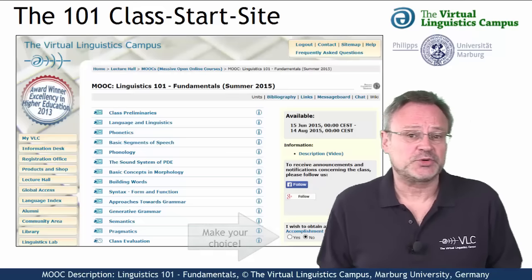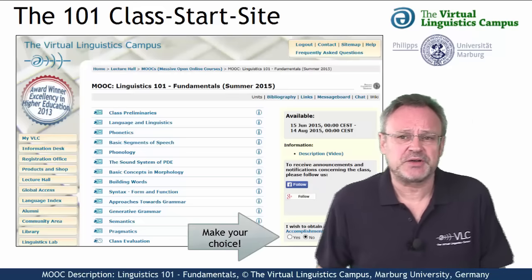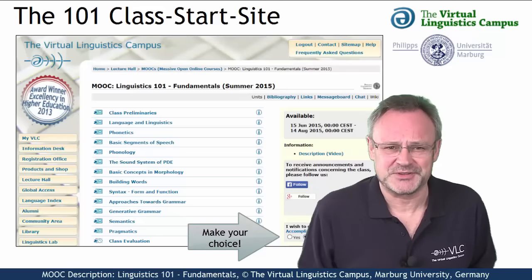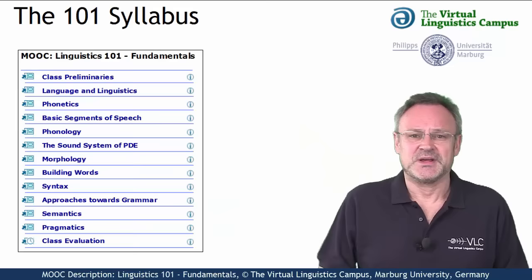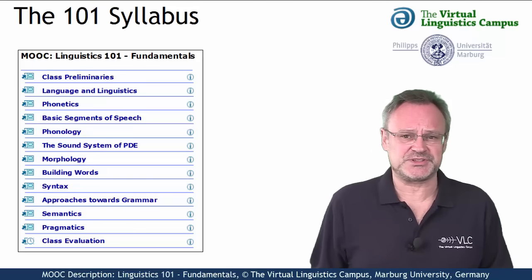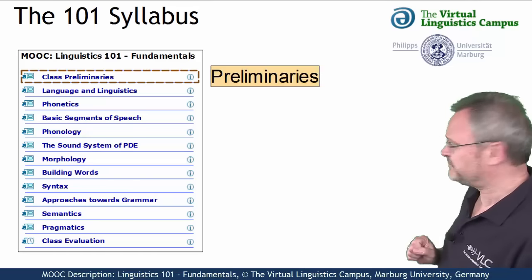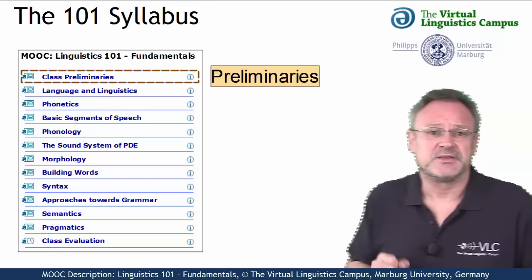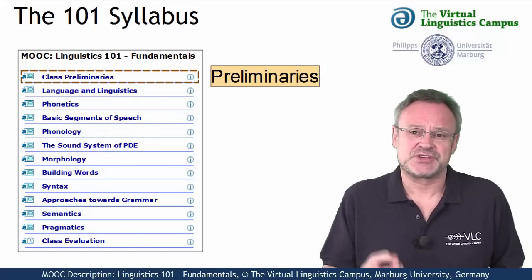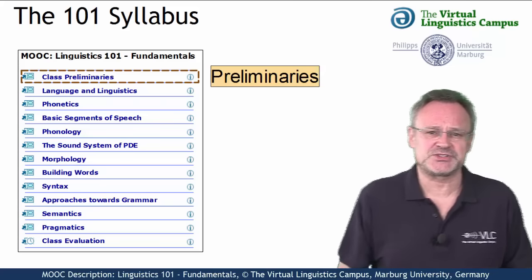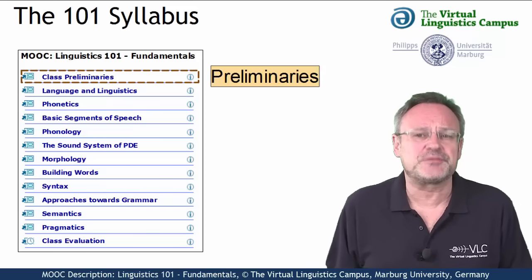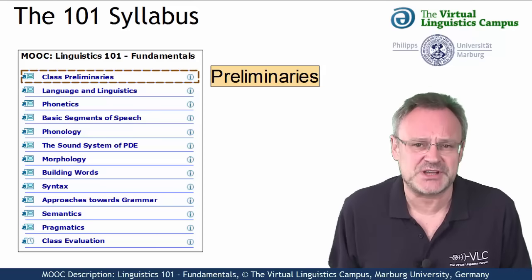Furthermore, you can make your choice about the type of certificate — I will come back to this. The class itself consists of 13 units, where the first one, the class preliminaries, informs you about some general aspects of the class and discusses what it means to study online on the Virtual Linguistics Campus.